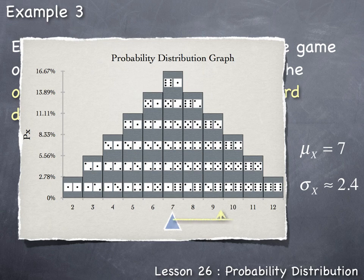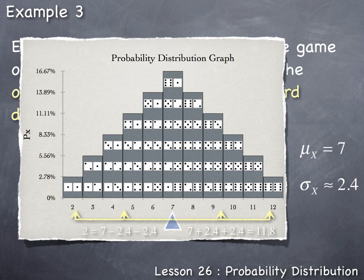Going plus two standard deviations: adding 2.4 once, then 2.4 twice, gets us to 11.8. Going minus two standard deviations: subtracting 2.4 once, then 2.4 twice from the mean of seven gives us 2.2. Thus, outcomes within two standard deviations fall in the interval from a low of 2.2 to a high of 11.8.